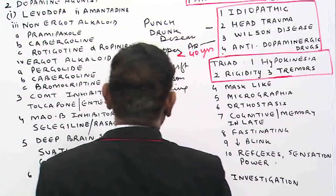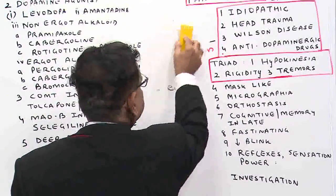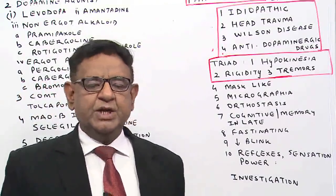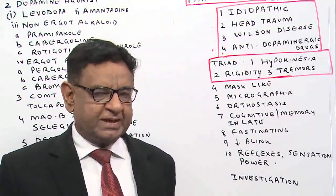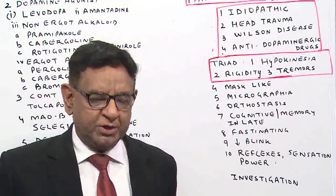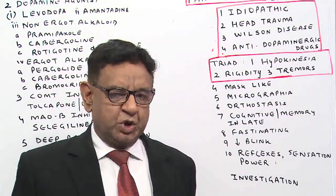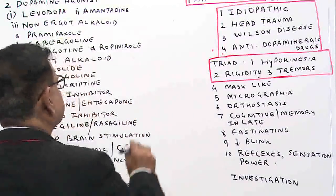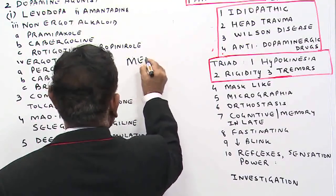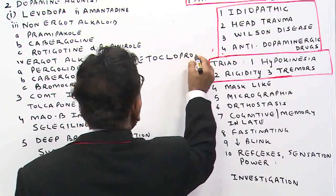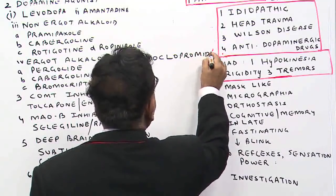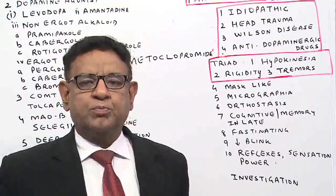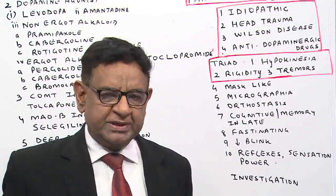Any antidopaminergic drug will produce Parkinson disease-like features. Anything which reduces dopamine level will further precipitate Parkinsonism. Drugs like metoclopramide, which we use as an anti-vomiting drug, or chlorpromazine, or anything which is an antidopaminergic drug will precipitate it.